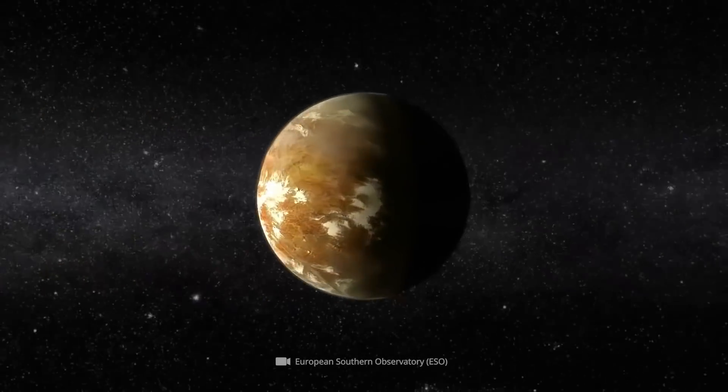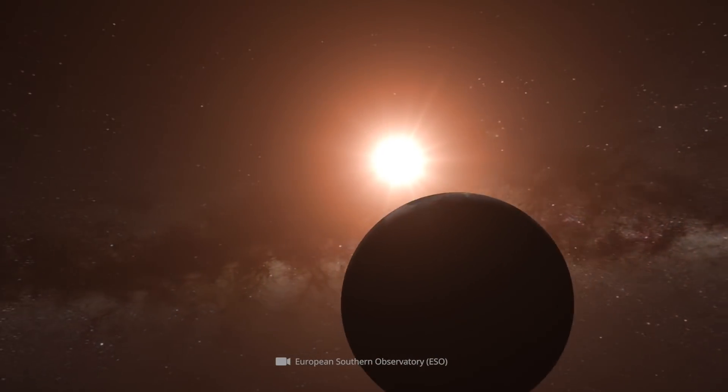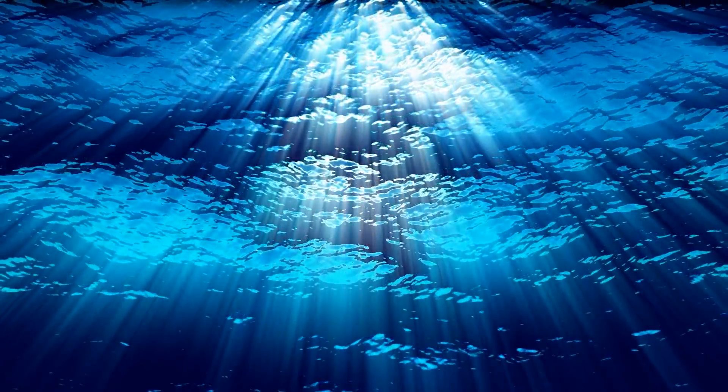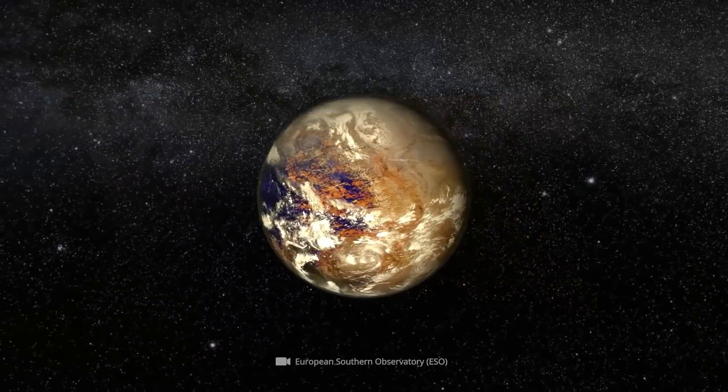The planet's existence was detected in August 2016 using the radial velocity method. Later, researchers used model calculations to find that liquid water could exist on Proxima Centauri b, the basic requirement for Earth-like life.